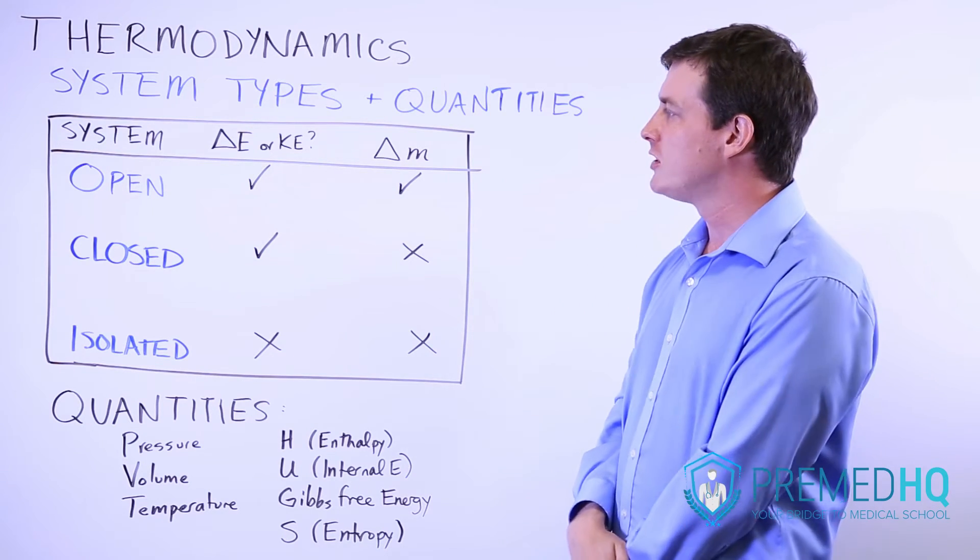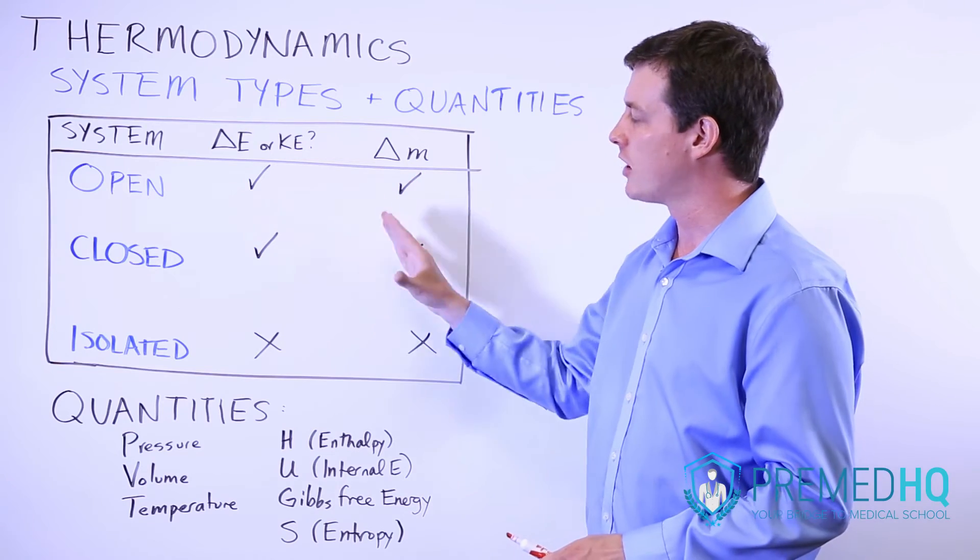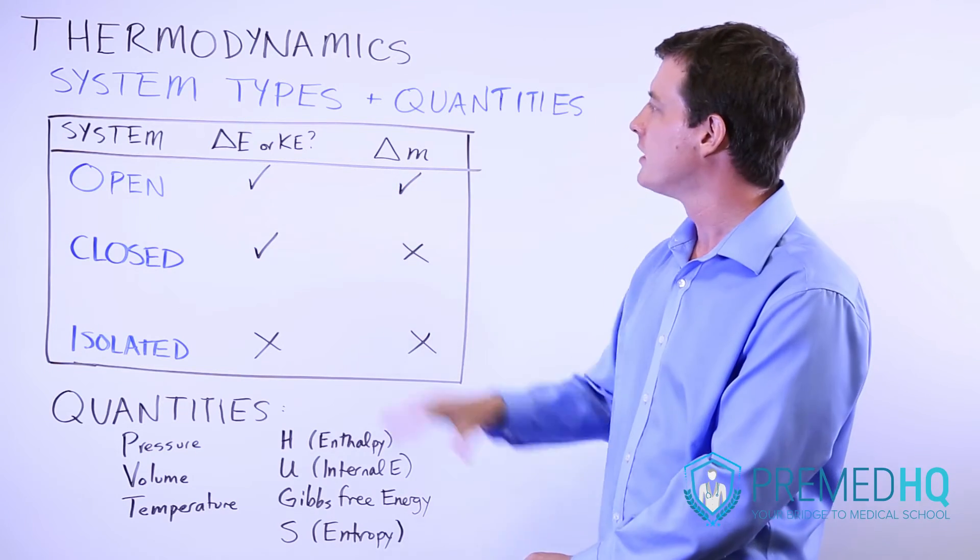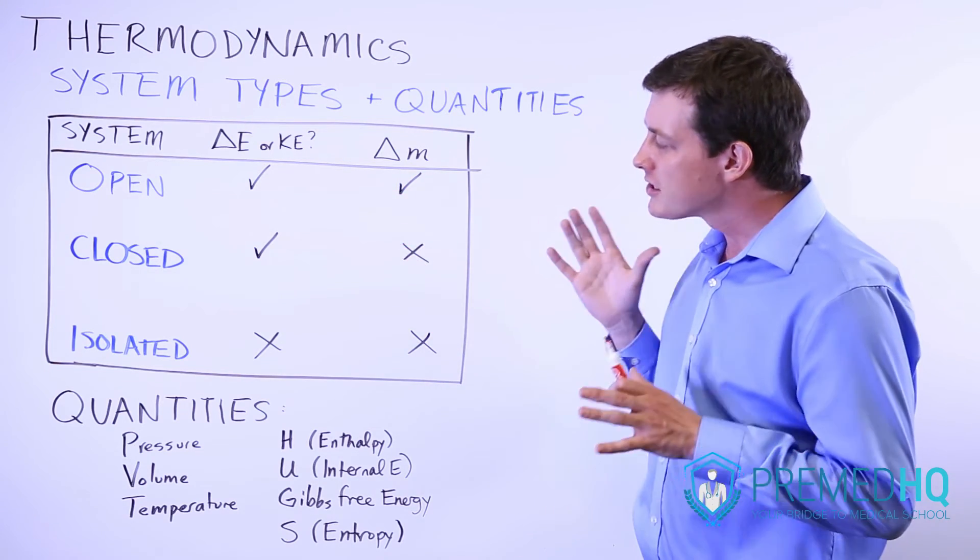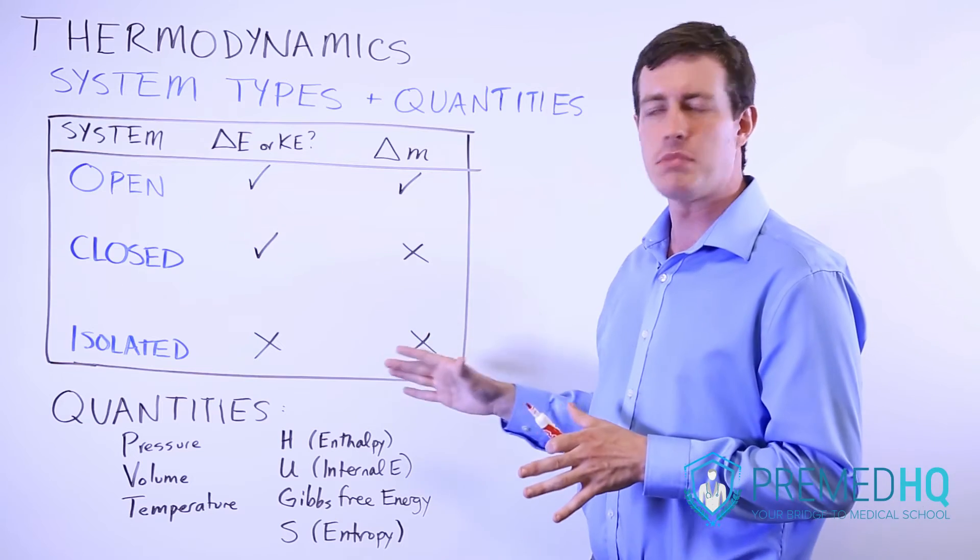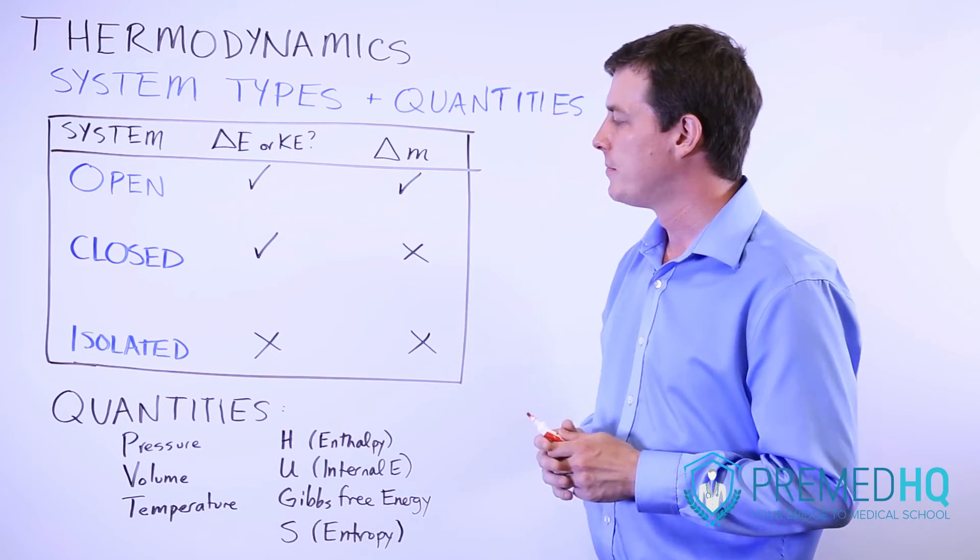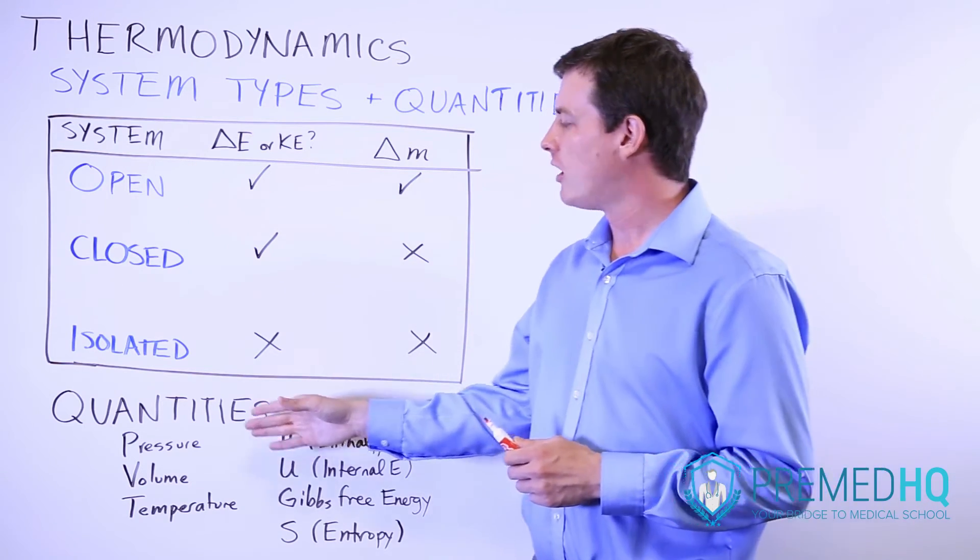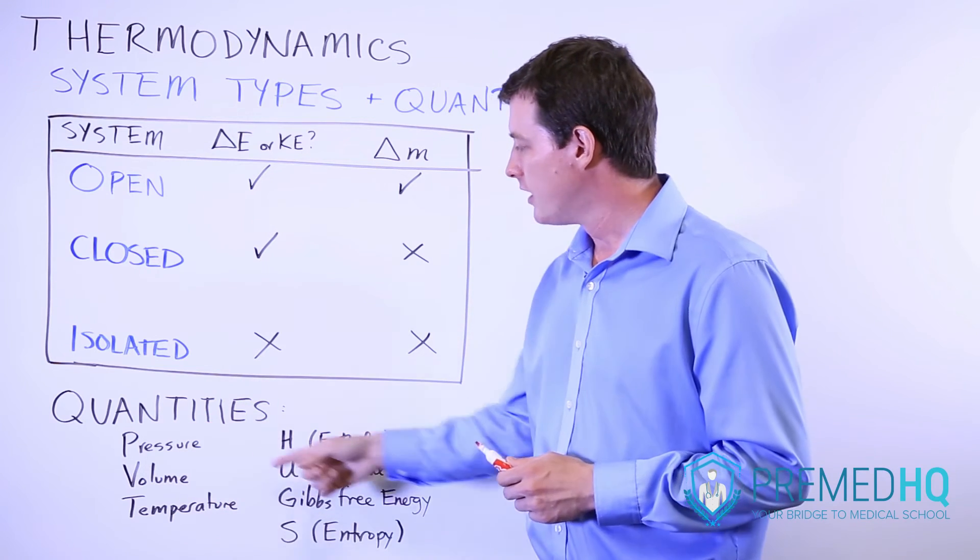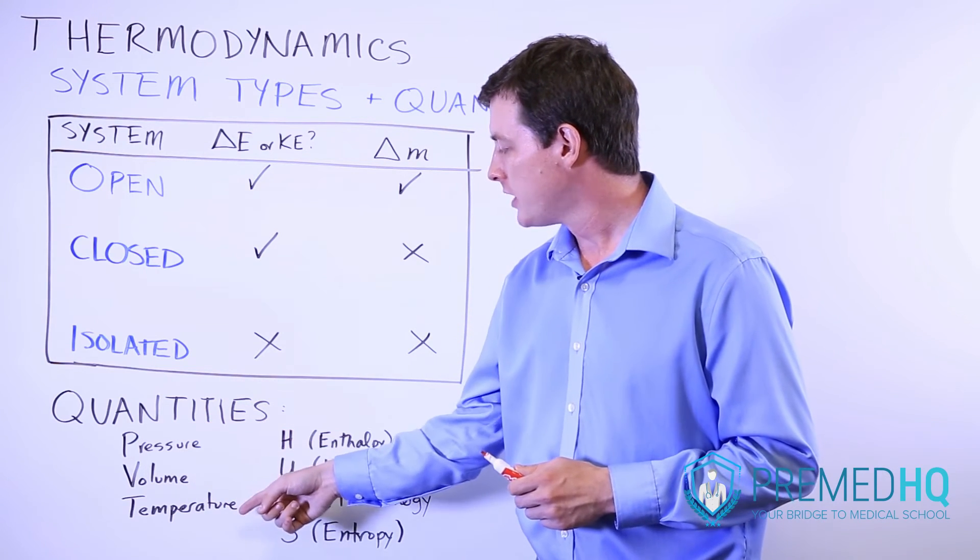The next thing after you've established what kind of systems are possible with thermodynamic questions is to understand the quantities that may participate in thermodynamic problems. Thermodynamic quantities include this list here: pressure, volume, temperature.